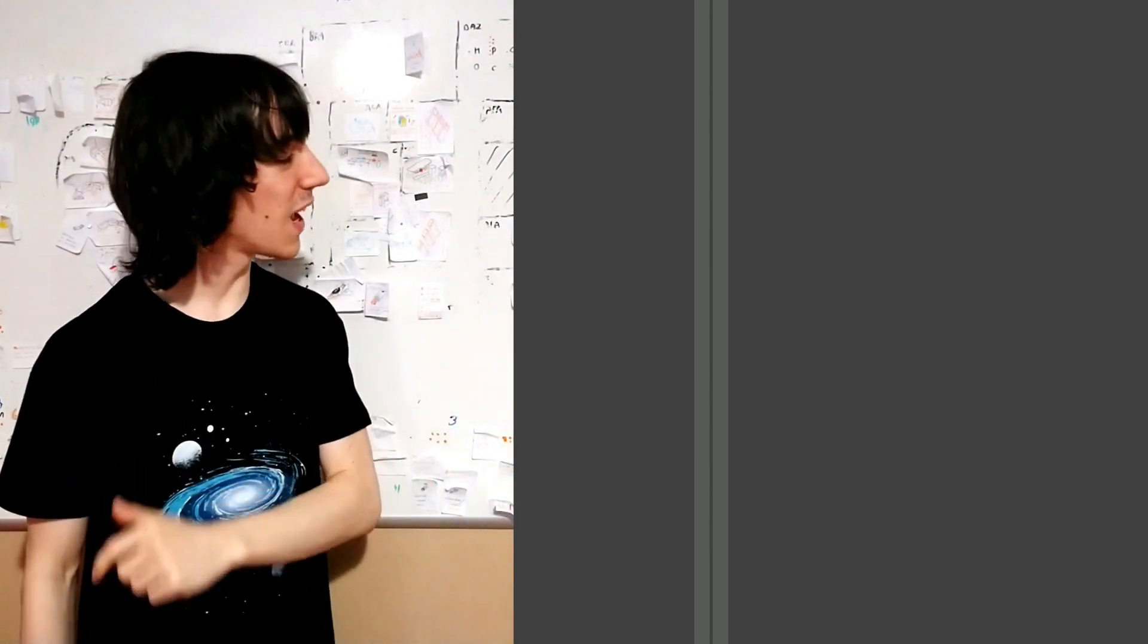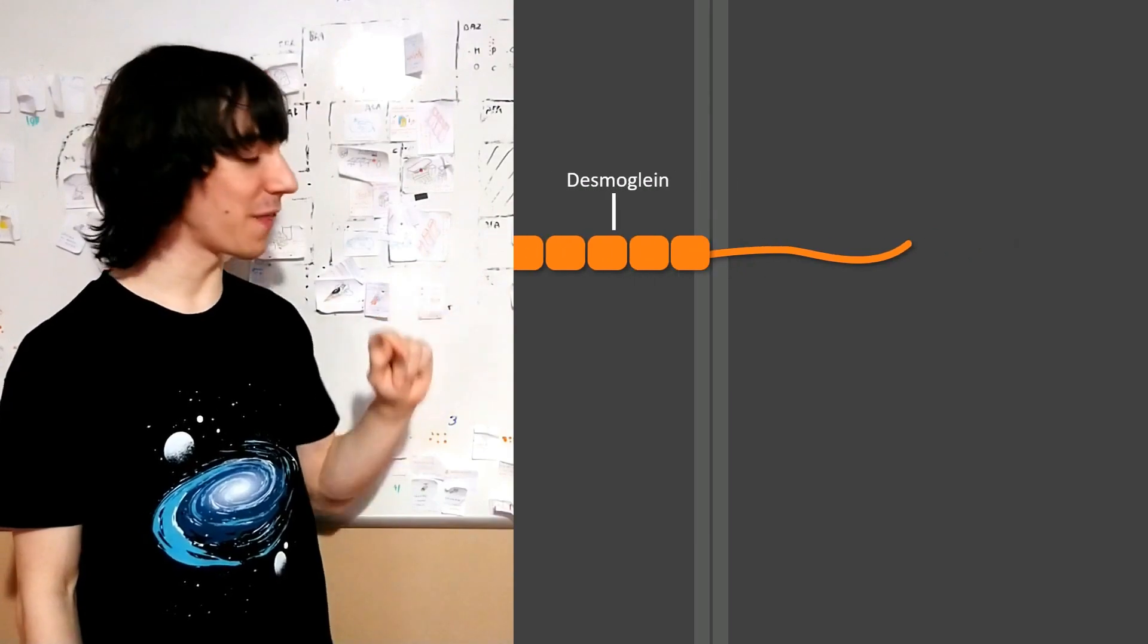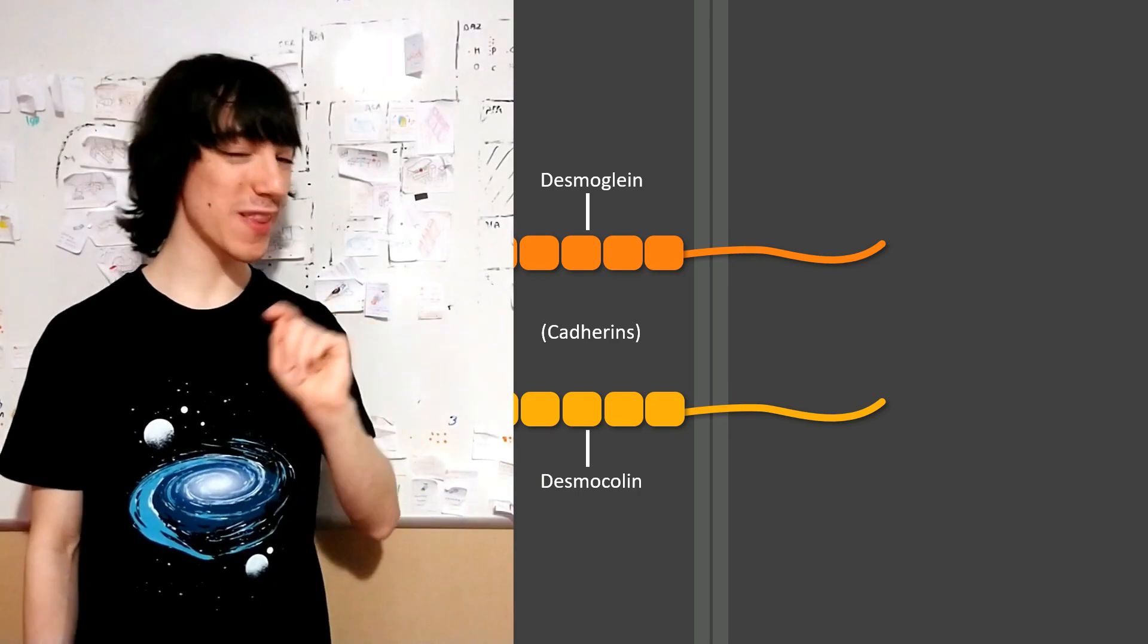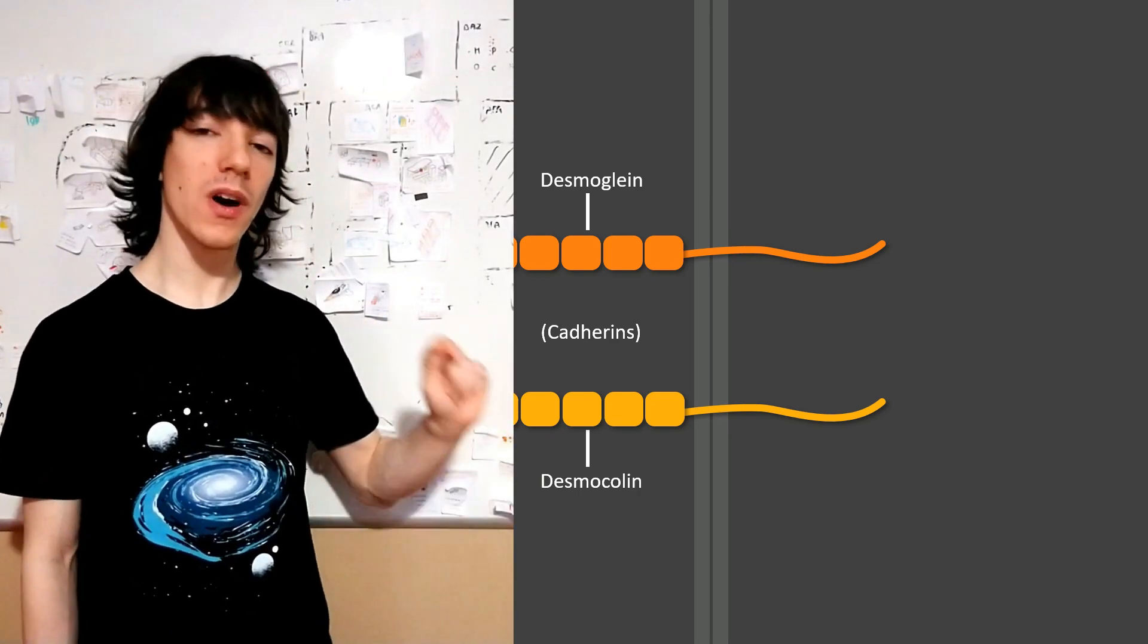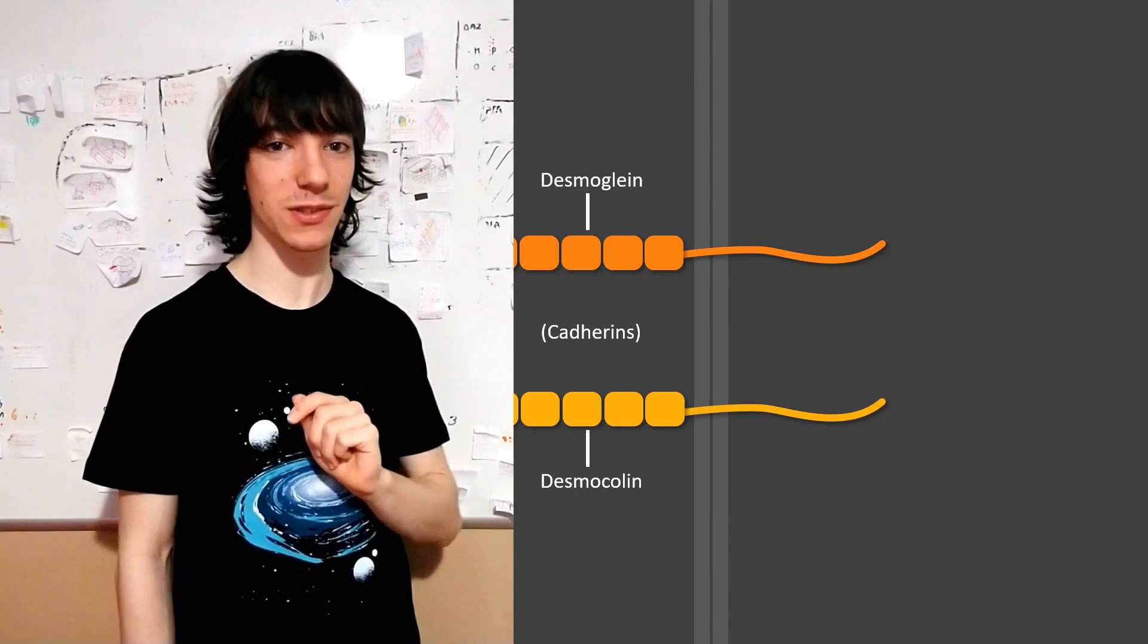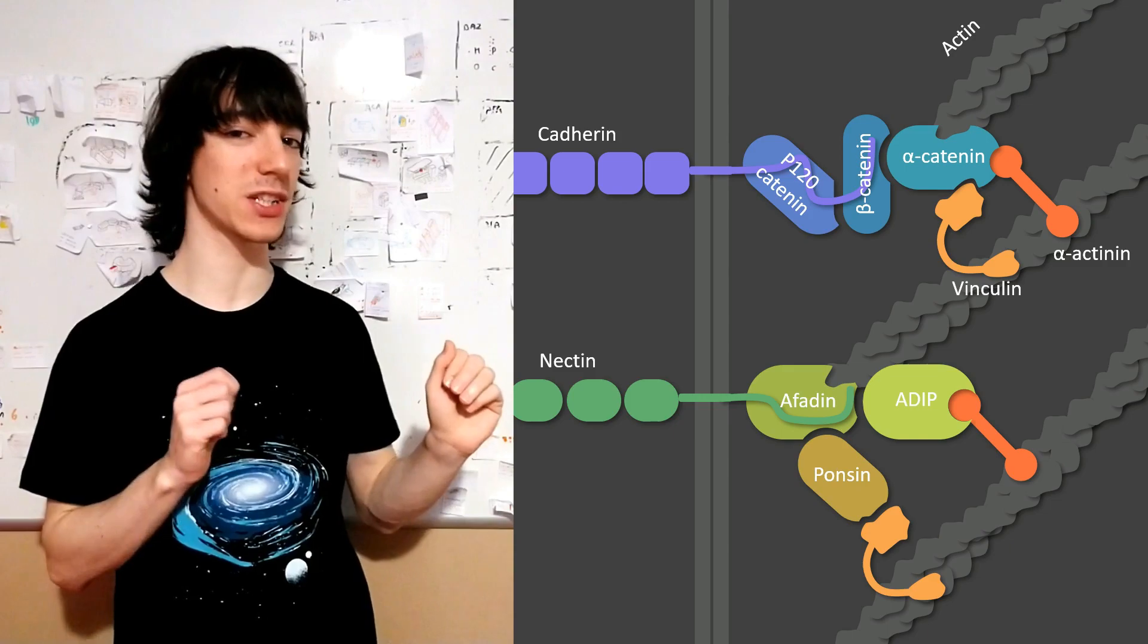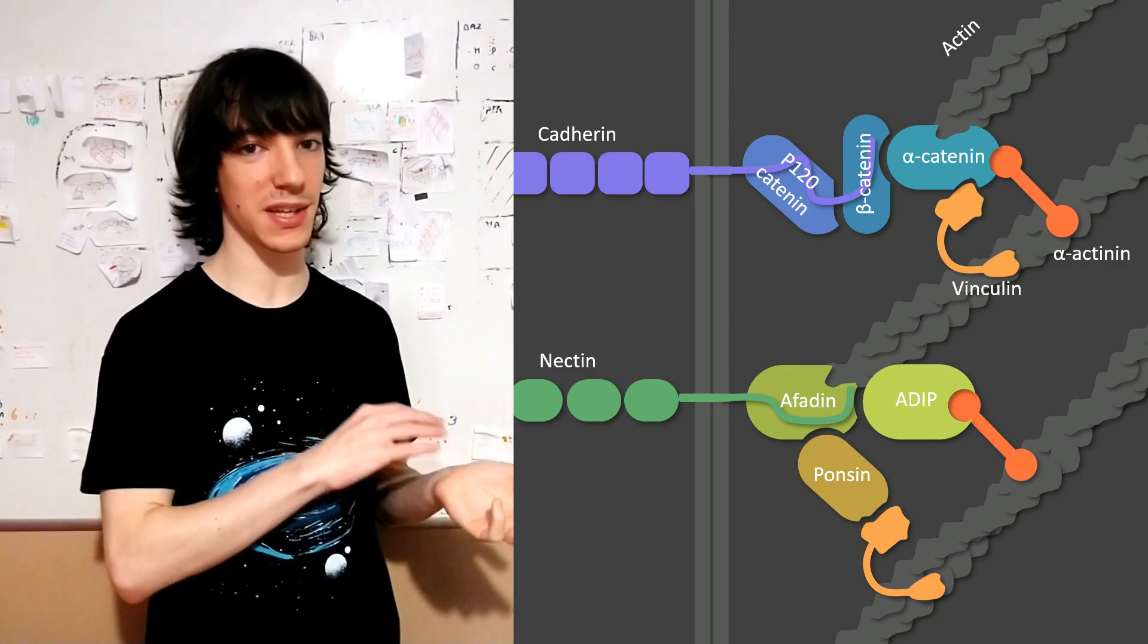The ones in desmosomes are desmoglein and desmocollin. And we have already mentioned them in a previous video, where we talked about adherence junctions. Cadherins were one of the kinds of transmembrane proteins in adherence junctions, the other one being nectins.